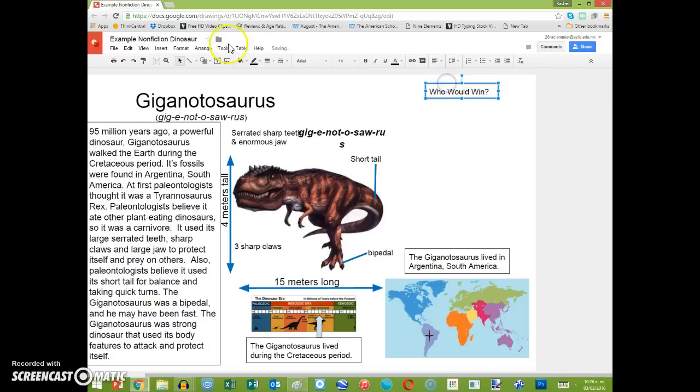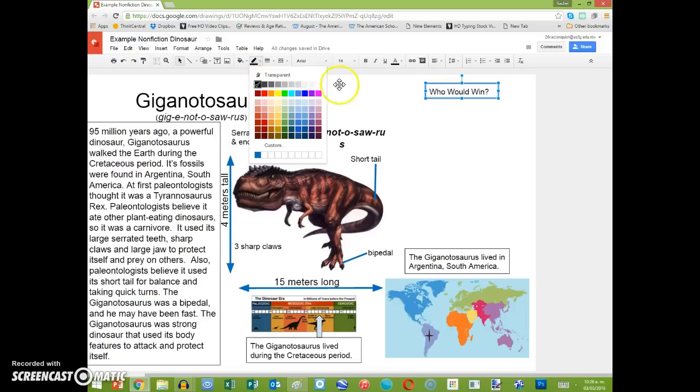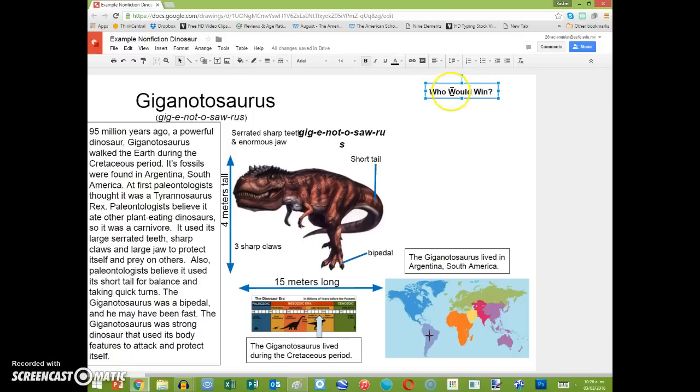If you don't want it black, you could make it transparent. You could also click bold, and then it would be a thicker type of letter, or you can even make it a little bit bigger. So now we have our title of Who Would Win.